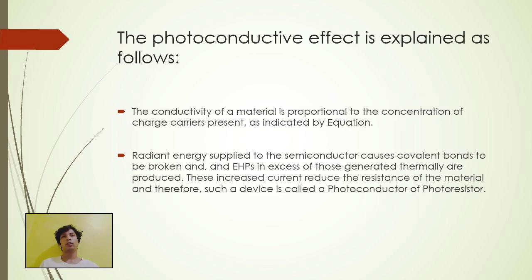Photoconductive effect is explained as follows. Conductivity of a material is proportional to the concentration of charged carrier presence as indicated by equation. Radiant energy supply to the semiconductor causes covalent bonds to be broken end, EHPs in excess of those generated thermally are produced. This increase current reduce the resistance of the material and therefore such device is called a photoconductor or photoresistor.